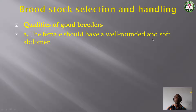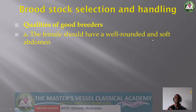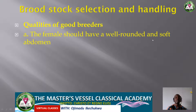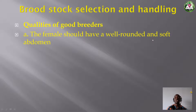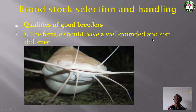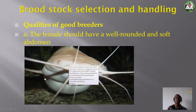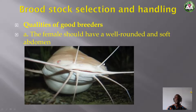Qualities of good breeders: the female fish should have a well-rounded and soft stomach. The soft stomach indicates she is carrying enough eggs, and the stomach should be well-rounded. When buying broodstock, look for females whose stomach is round and soft — that is the quality of a good female fish.